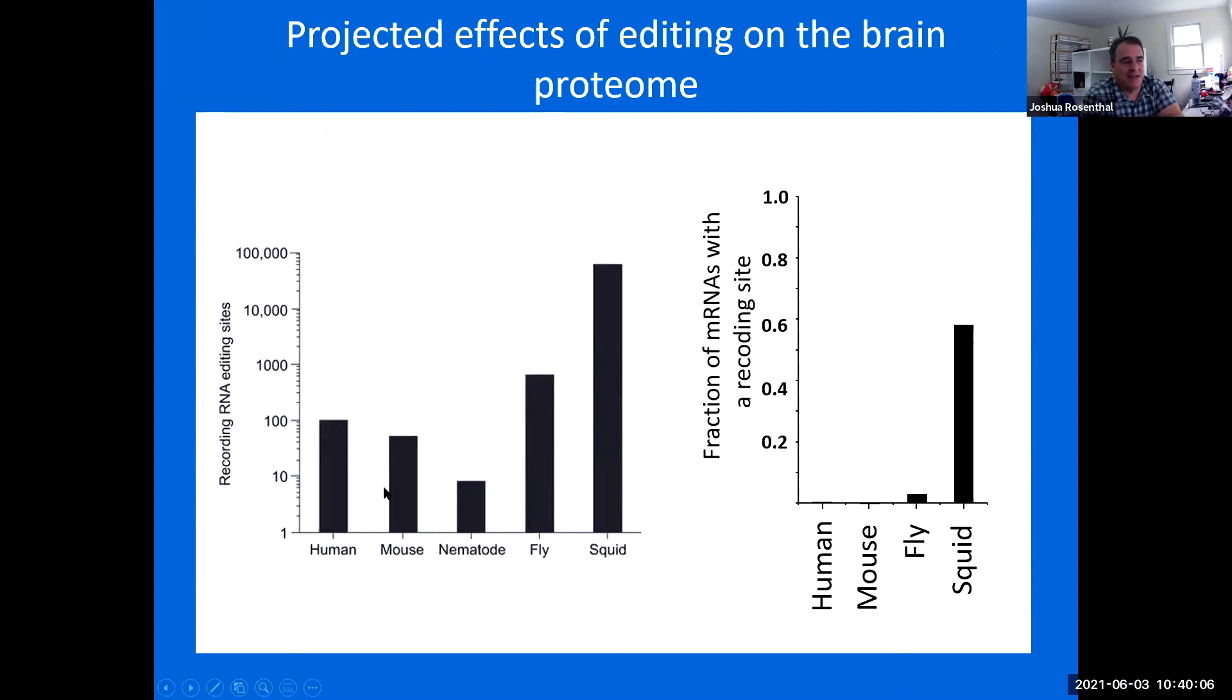And essentially what we got is something like this. I'll first look on the right side where the fraction of mRNAs that have a recoding site based on this process. That's the fraction of messenger RNAs where a codon is converted. And you see roughly two thirds of all squid messenger RNAs in the brain are recoded to some extent.